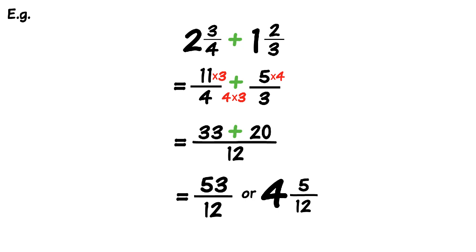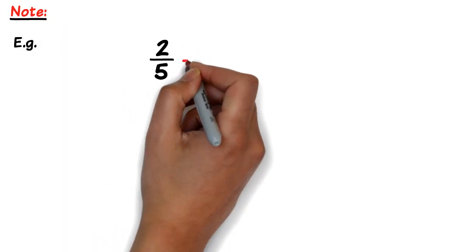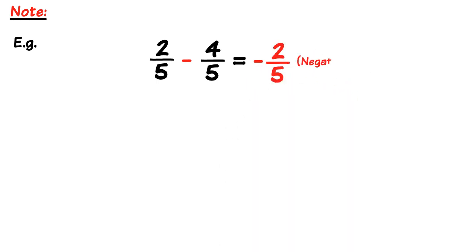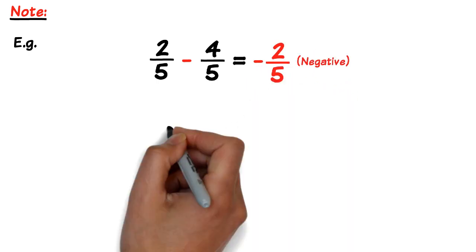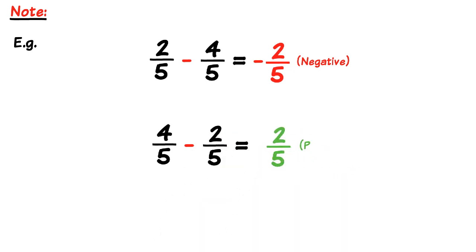As a side note you should pay attention to the order with which you subtract fractions. For example 2 over 5 minus 4 over 5 equals minus 2 over 5. So we get into negative fractions. Whereas 4 over 5 minus 2 over 5 equals 2 over 5 which is positive. So you should be wary about the order with which you are subtracting fractions.